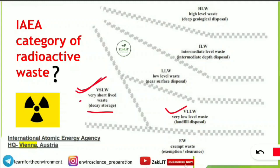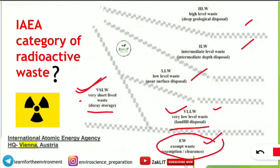The fifth category is VLLW — Very Low Level Waste. These are disposed of in a landfill-type disposal technique, unlike HLW, ILW, and LLW. The last category is EW — Exempt Waste. These are exempted from disposal because they are not that harmful; they are an exemption or clearance kind of radioactive waste.